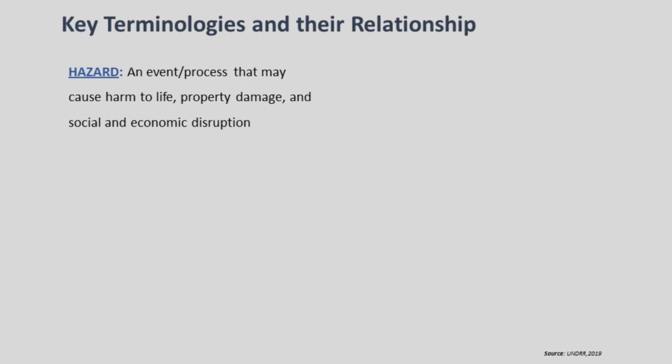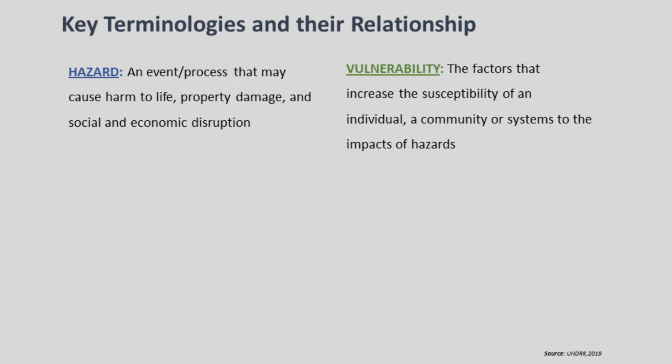To prepare cities for climate change, we need to first evaluate the potential tangible impacts and quantify the risks. We need to understand some key terminologies. A hazard is an event or process such as floods and storms that may cause harm to life and property as well as cause social and economic disruption. Vulnerability relates to the factors that increase the susceptibility of an individual, a community or a system to the impacts of hazards. Physical or socio-economic factors such as type of housing, income levels, social status and gender determine vulnerability.